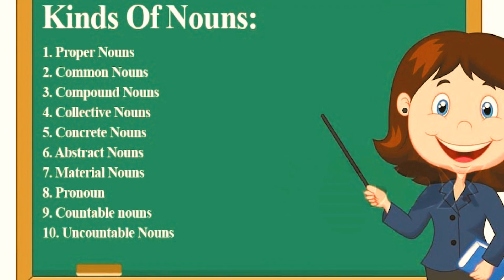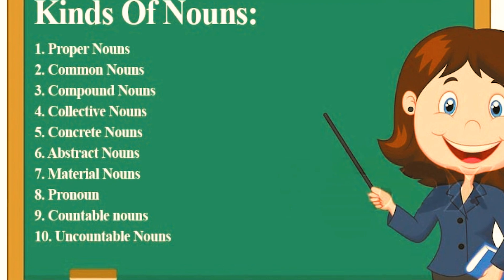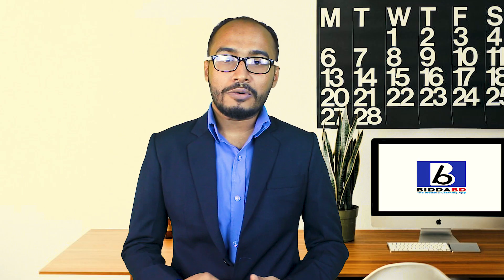So here we call Leon a proper noun and king a common noun. The kinds of nouns are: proper noun, common noun, singular noun, plural noun, countable noun, uncountable noun and collective noun.